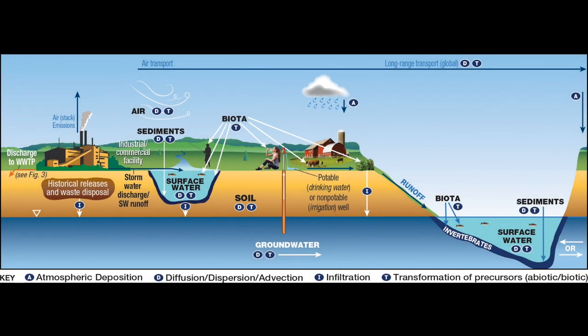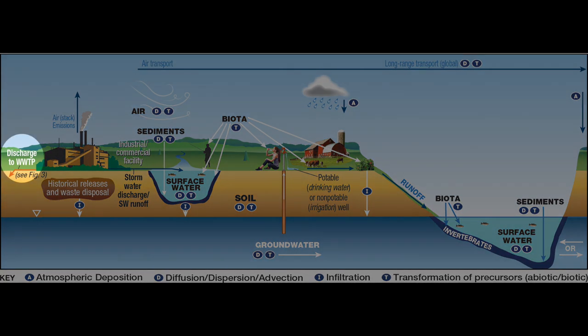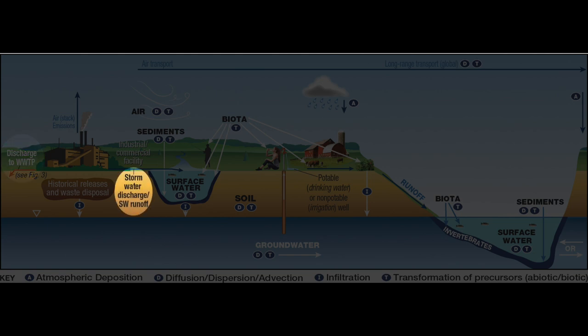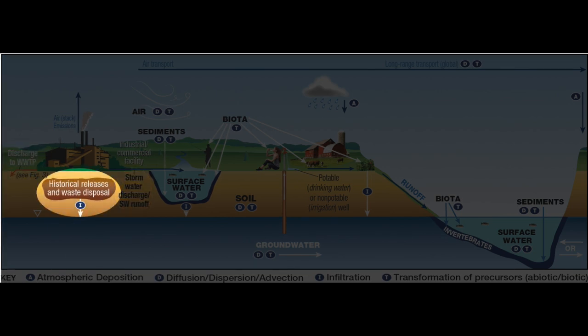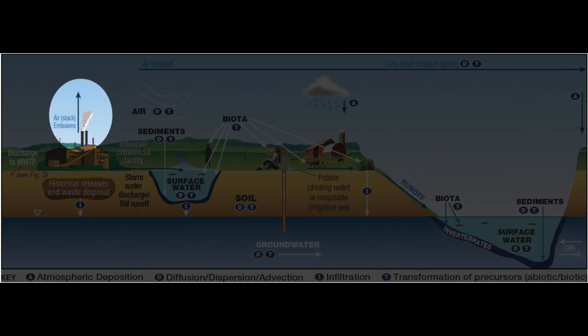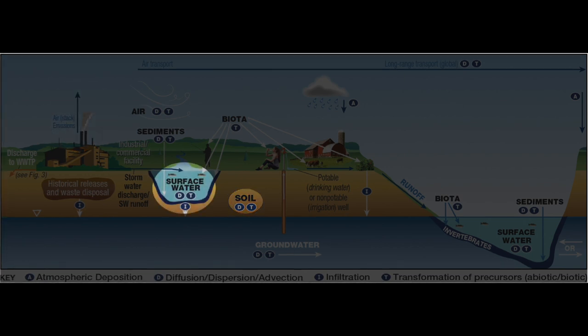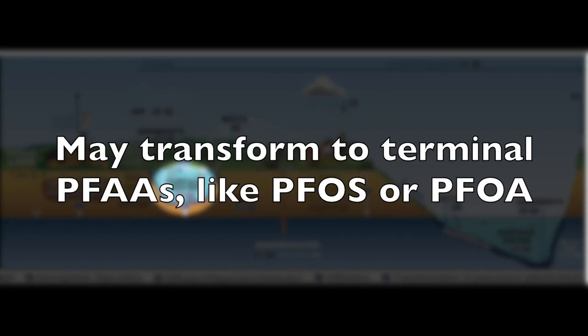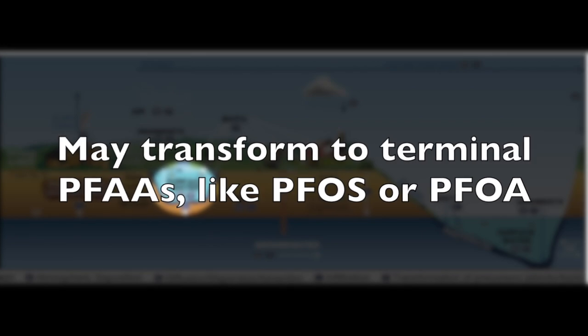The PFAS transport and exposure routes at a typical industrial site are similar to those for the AFFF sites. However, there are additional routes of exposure through discharge to wastewater treatment plants, stormwater sewers, and/or waste disposal areas, as well as stack emissions. PFAS released to the atmosphere as either volatile or particulate phases can be transported and deposited to soil or surface water away from the site, where they may transform into terminal PFAAs like PFOS and PFOA.